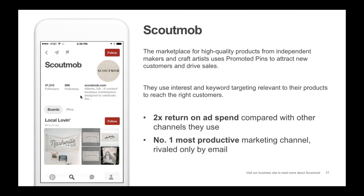Here's another case study from Scout Mob, a curated lifestyle marketplace that celebrates independent makers and their handcrafted creations — from hand-stitched camera straps to custom stamp necklaces. Scout Mob's primary goal is to attract new customers and inspire sales. Because they prioritize conversions, they've learned to optimize their promoted campaigns as they go, moving people closer to checkout. As a startup that has to be savvy about their marketing budget, Scout Mob pays careful attention to return on ad spend, using CPC promoted campaigns and the Pinterest tag. Scout Mob uses interest as well as keyword targeting relevant to their products, and their Pinterest presence is their most productive marketing channel, rivaled only by email.